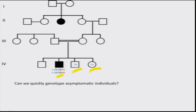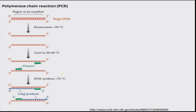So how will you really go about doing it? Can you quickly genotype these asymptomatic individuals? The answer is yes. There is one powerful technique that we have, which is called PCR, or polymerase chain reaction. Many of you would have heard about it. What we are going to discuss is how this technique can be used to screen for mutations in individuals.